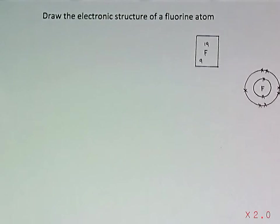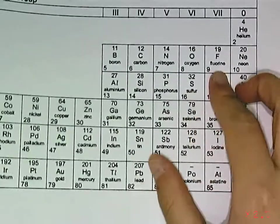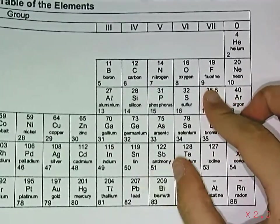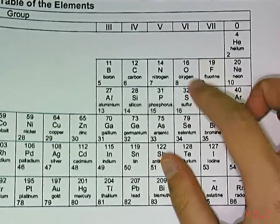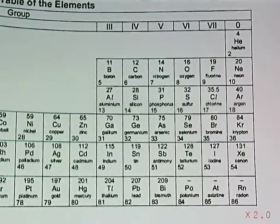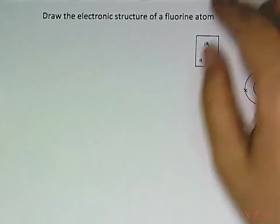Let's look at our periodic table. The fluorine is in the seventh group and it's a non-metal. I've already written it out here.